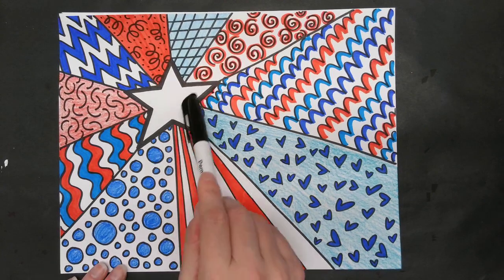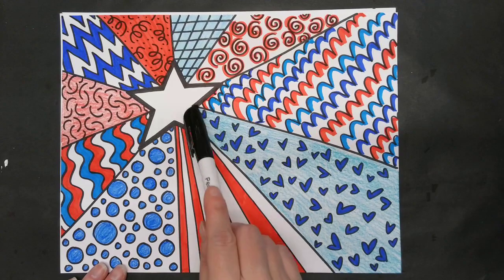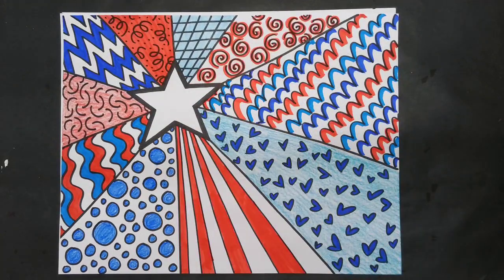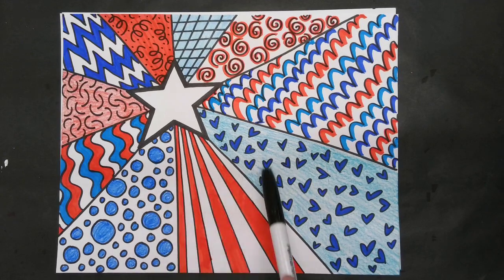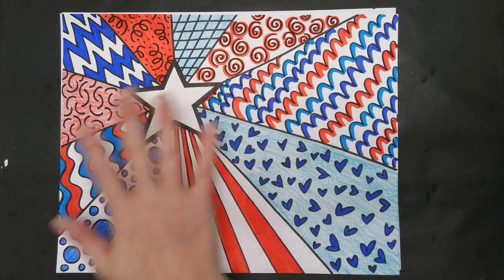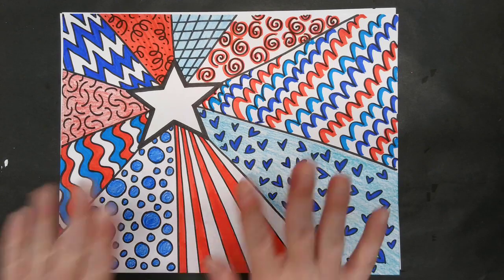So what I have is a star in the middle, and then I've got these lines that are coming out of each point of my star. And then in each section that is now created, I've added some patterns that are inspired by Romero Brito. And obviously, we're using the red, white, and blue colors for Veterans Day.